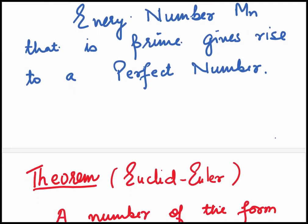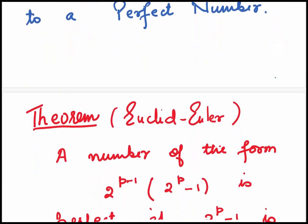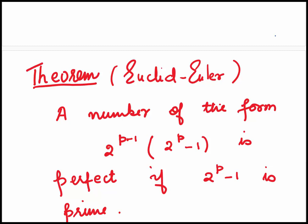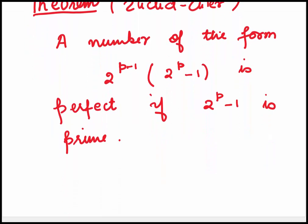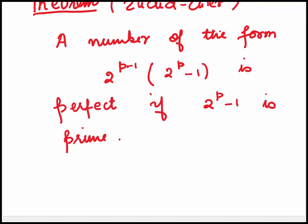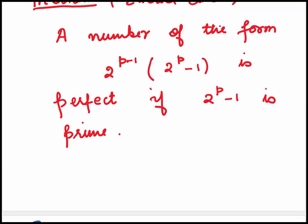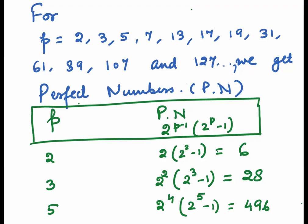Let's look at the Euclid-Euler theorem, which states a number of the form 2^(p-1) × (2^p - 1) is perfect if 2^p - 1 is prime. Look at some examples. For p = 2, 3, 5, etc., we get perfect numbers.